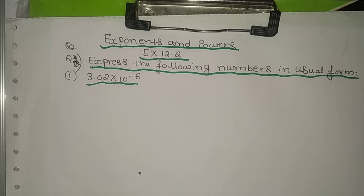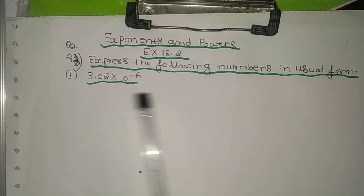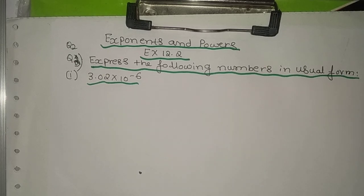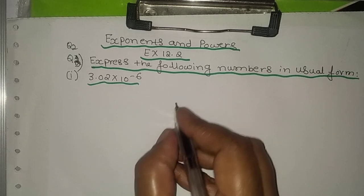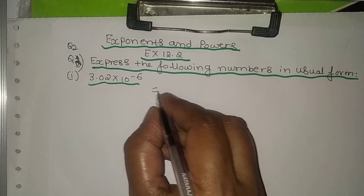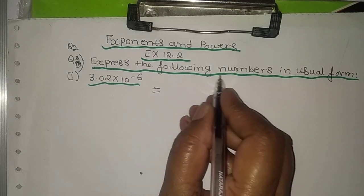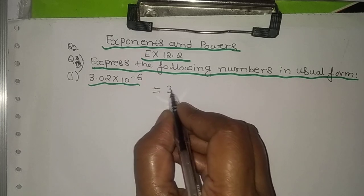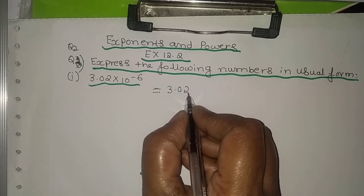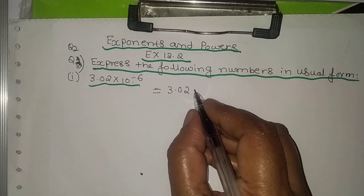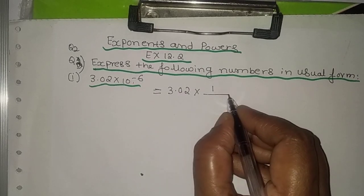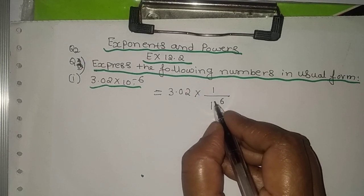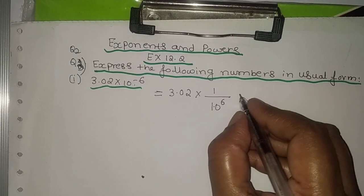The first problem is: express the following numbers in the usual form. This is given as 3.02 into 10 to the power of minus 6. We have to represent or express this in the usual form. The first step is to write 10 to the power minus 6 as 1 by 10 to the power 6. When this comes to the denominator, the sign becomes plus 6.